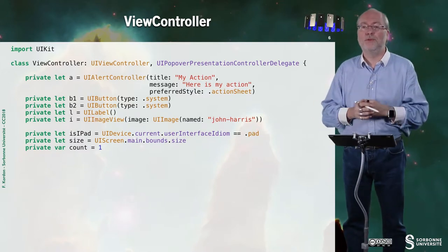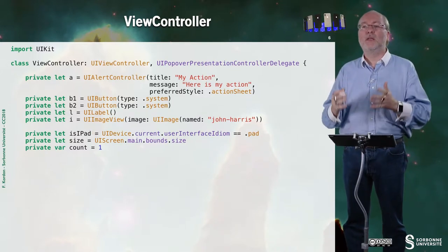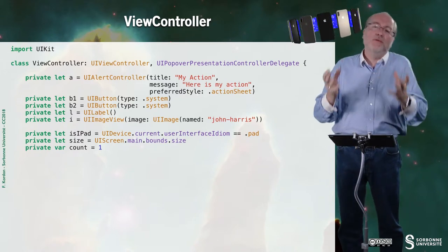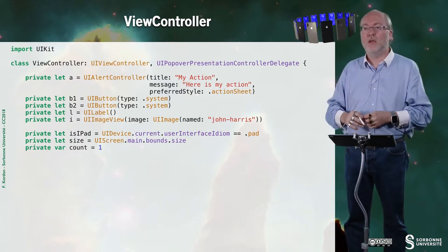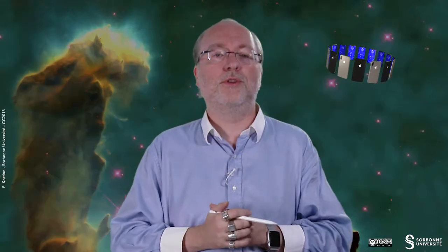I'm embedding some view. And I have a variable that is initialized to true if I'm executing on an iPad, a large device, in fact, or false if it's not the case. And I just store the size of the screen so that it's easier for me. And I have some counter.